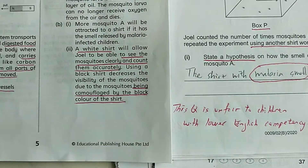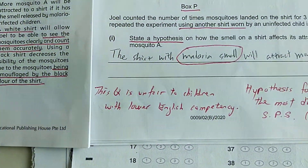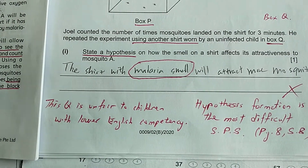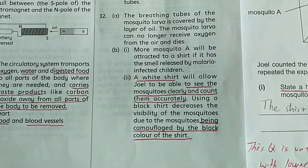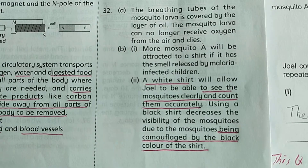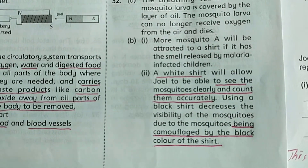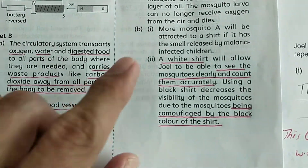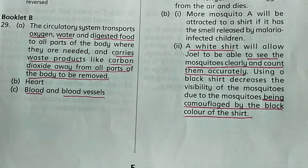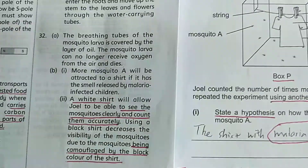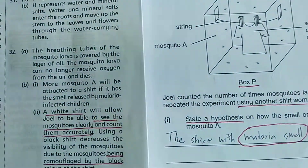This is the model answer as published by the publisher, and I can accept this answer. The question says: state a hypothesis on how the smell of a shirt affects its attractiveness to mosquito A. The model answer for Part A is: 'More mosquito A will be attracted to a shirt if it has the smell released by malaria-infected children.' This is the hypothesis — the expected outcome when the experiment is conducted. You can see the white shirt worn by children infected with malaria.